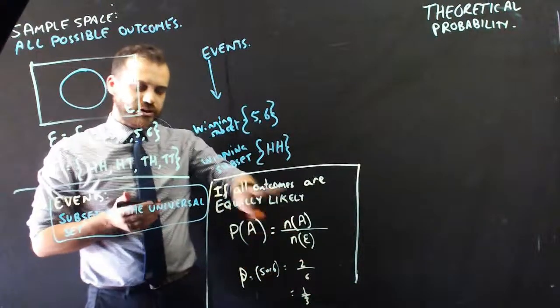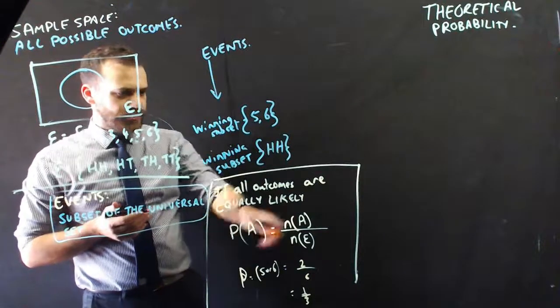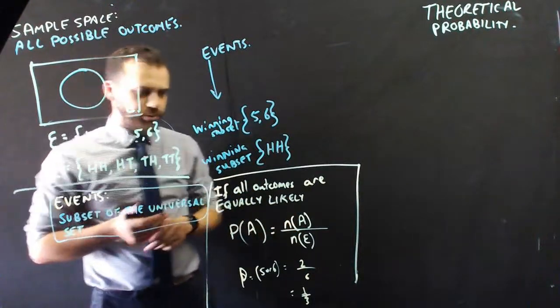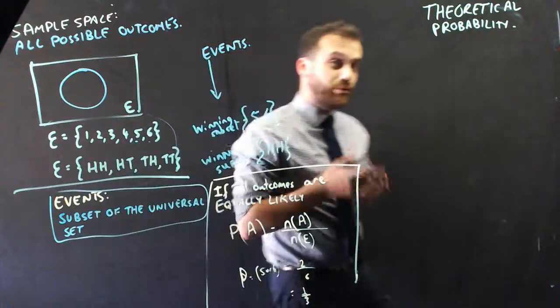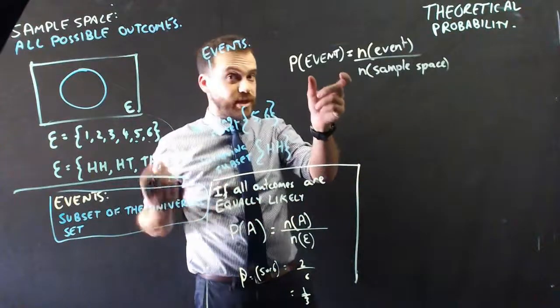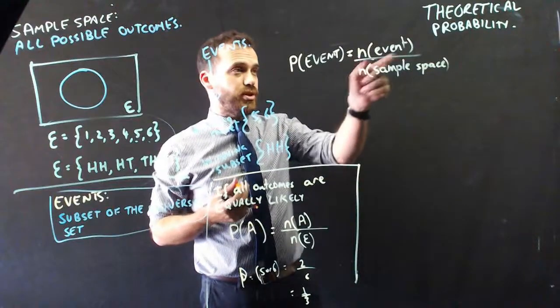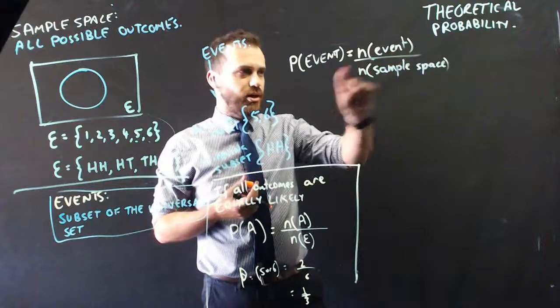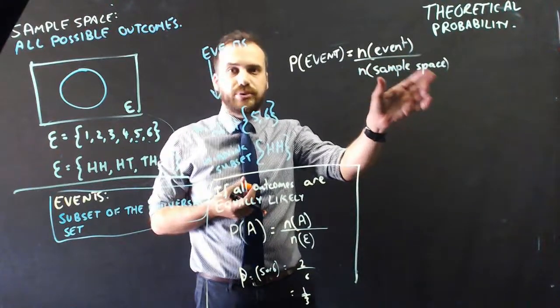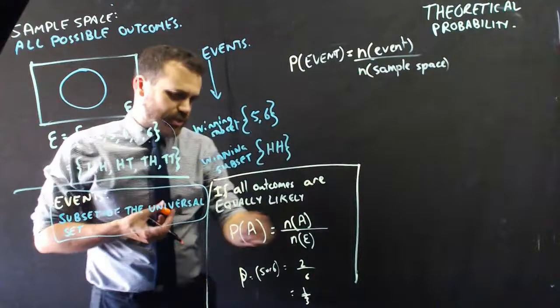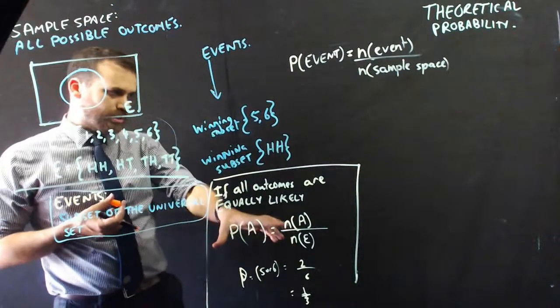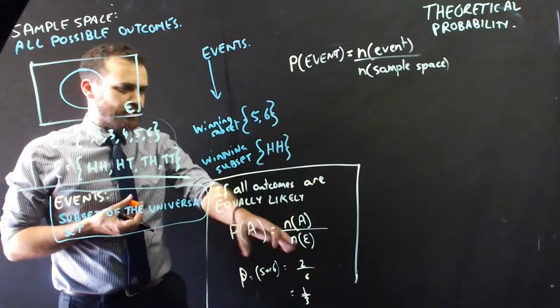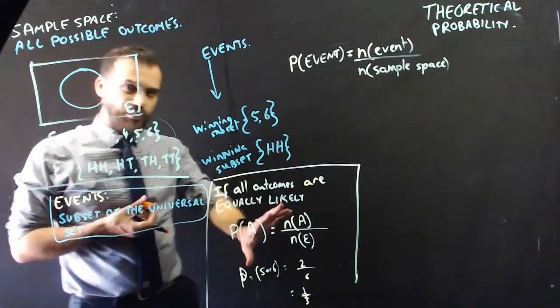Alright, so you've seen that before. That's the formula for theoretical probability. You may not have seen it written with this notation before. I might write it with some different notation that you may be more familiar with. So, the probability of some event happening is equal to the size of the event's subset, over the size of the sample space. That formula is identical to that formula. This formula is just using some slightly more sophisticated mathematical notation to make the same point.